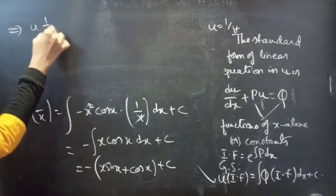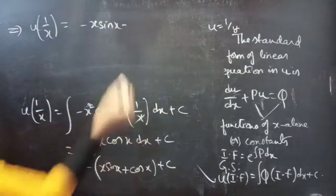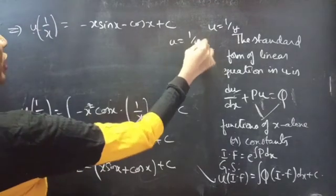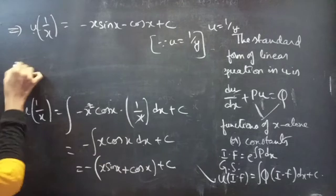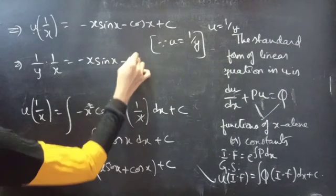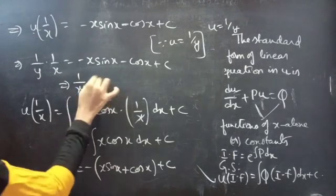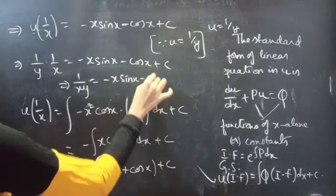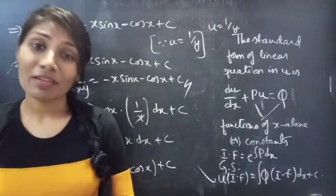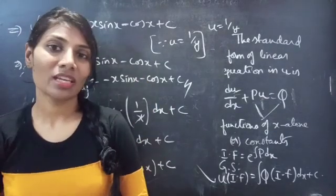Then u times 1/x equals minus x sin x minus cos x plus c. Replacing u by 1/y, we get (1/y)(1/x) equals minus x sin x minus cos x plus c. Therefore 1/(xy) equals minus x sin x minus cos x plus c is the required solution. We have solved a problem from Bernoulli's equation. See you in the next video. Bye-bye.